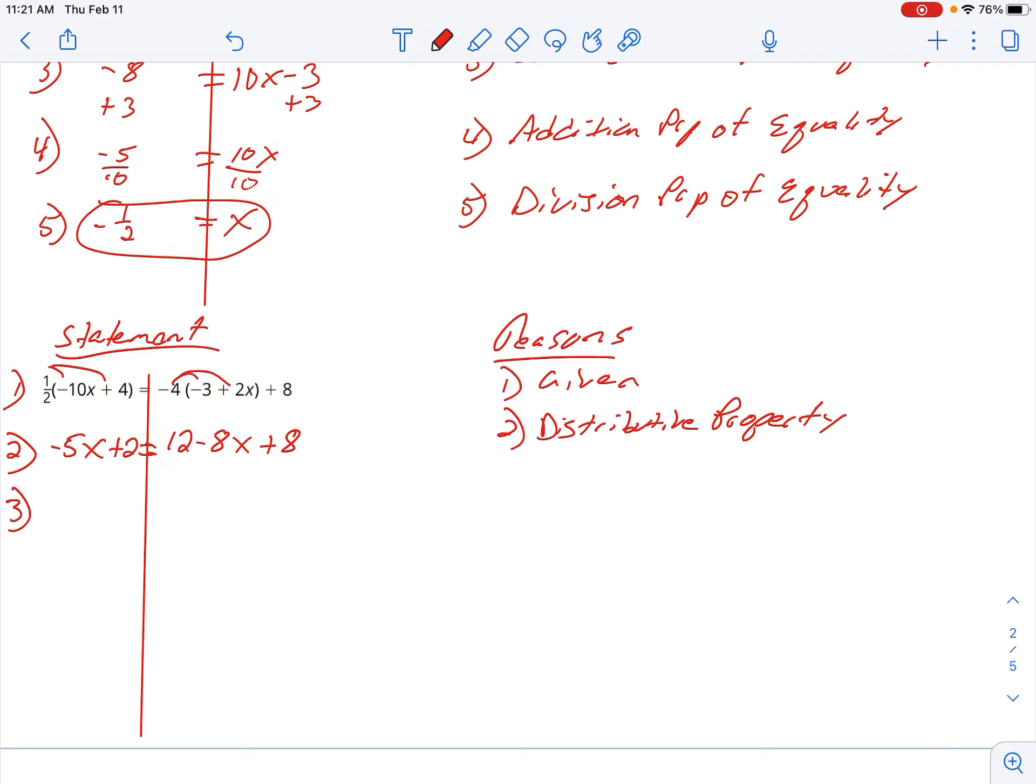Now, after I distribute, I take a look to see if I have like terms to combine. Sometimes you do, sometimes you don't. Right-hand side, I do. All right, so left is going to drop on down. Now, on the right-hand side, I've got these like terms to bring together. So 12 plus 8, give me 20. And that was what we call combined like terms, or you could just say simplify.